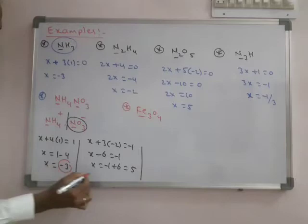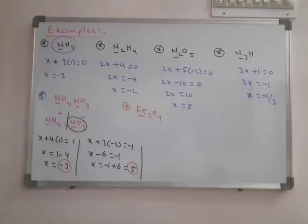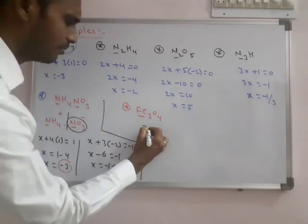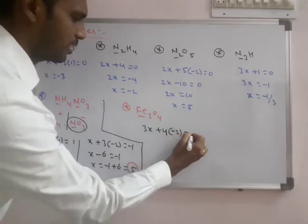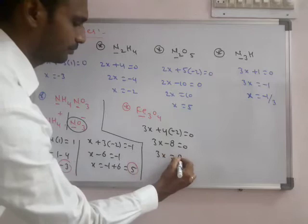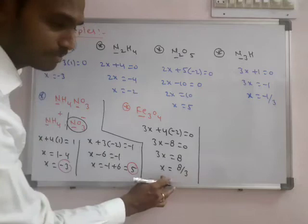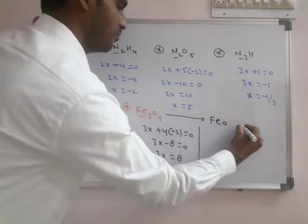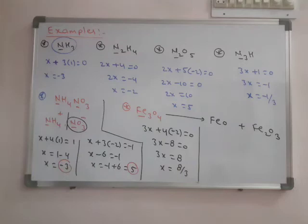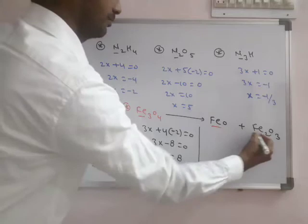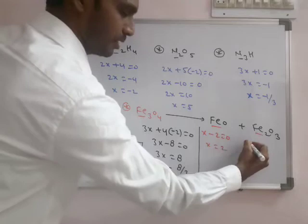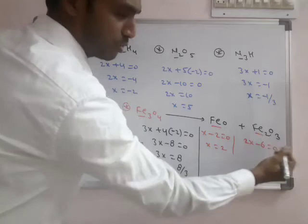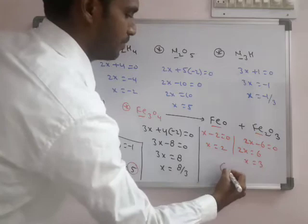For Fe3O4: normal calculation gives 3x plus 4 into minus 2 equals zero, so 3x = 8, x = 8/3. However, we can also consider it as a combination of FeO and Fe2O3. In FeO, x equals plus two; in Fe2O3, 2x minus 6 equals zero so x equals plus three. So the oxidation numbers are plus two and plus three.